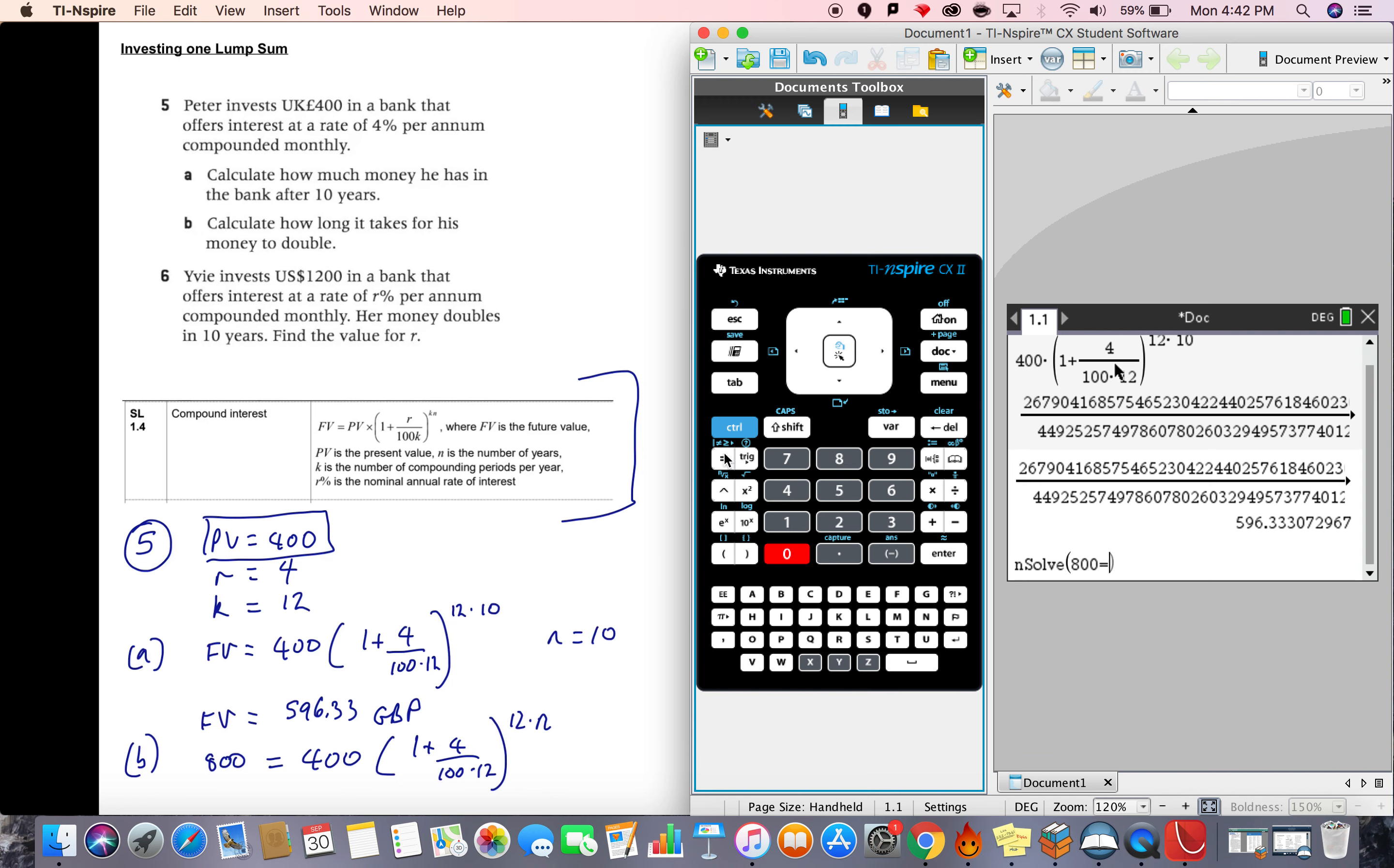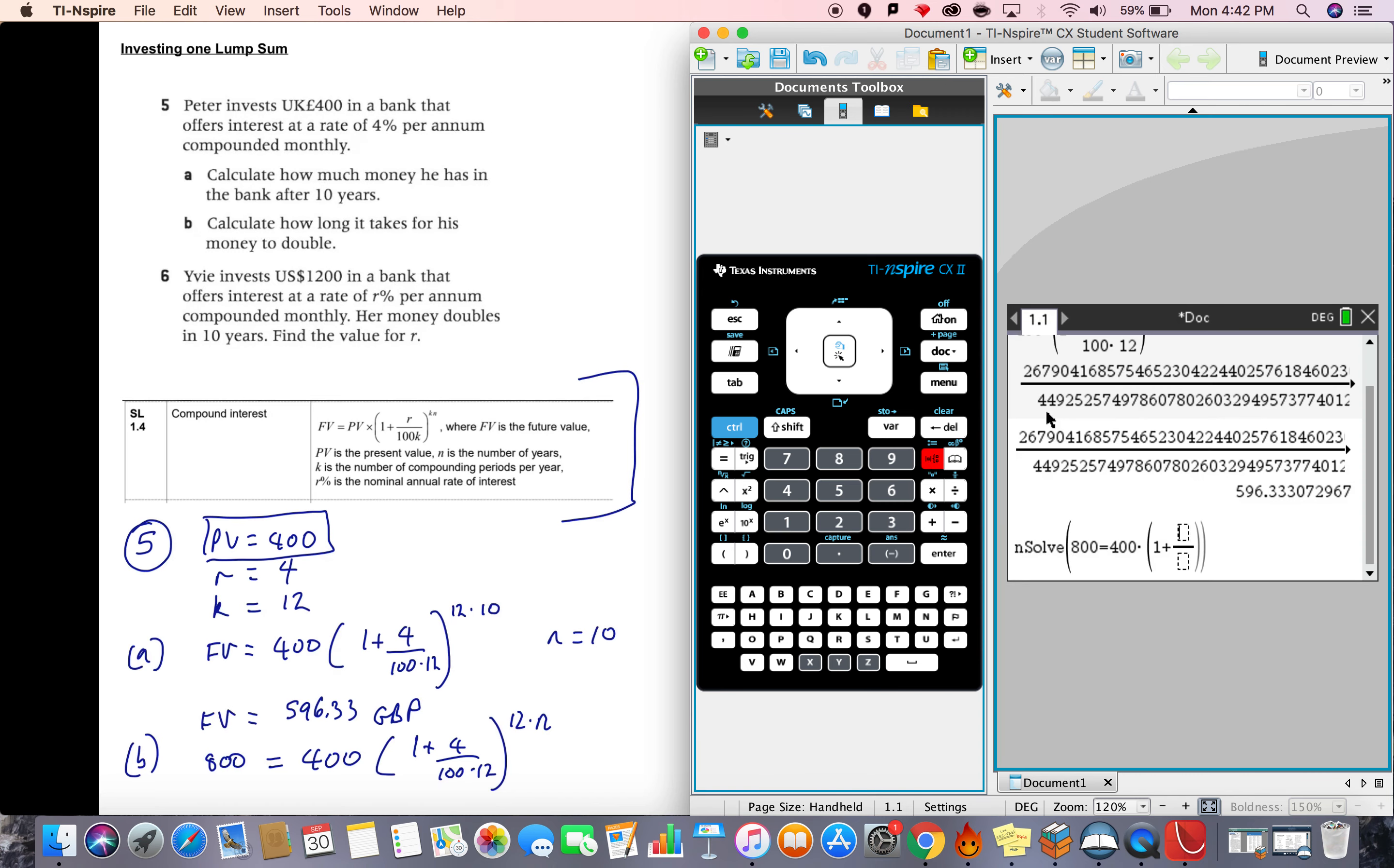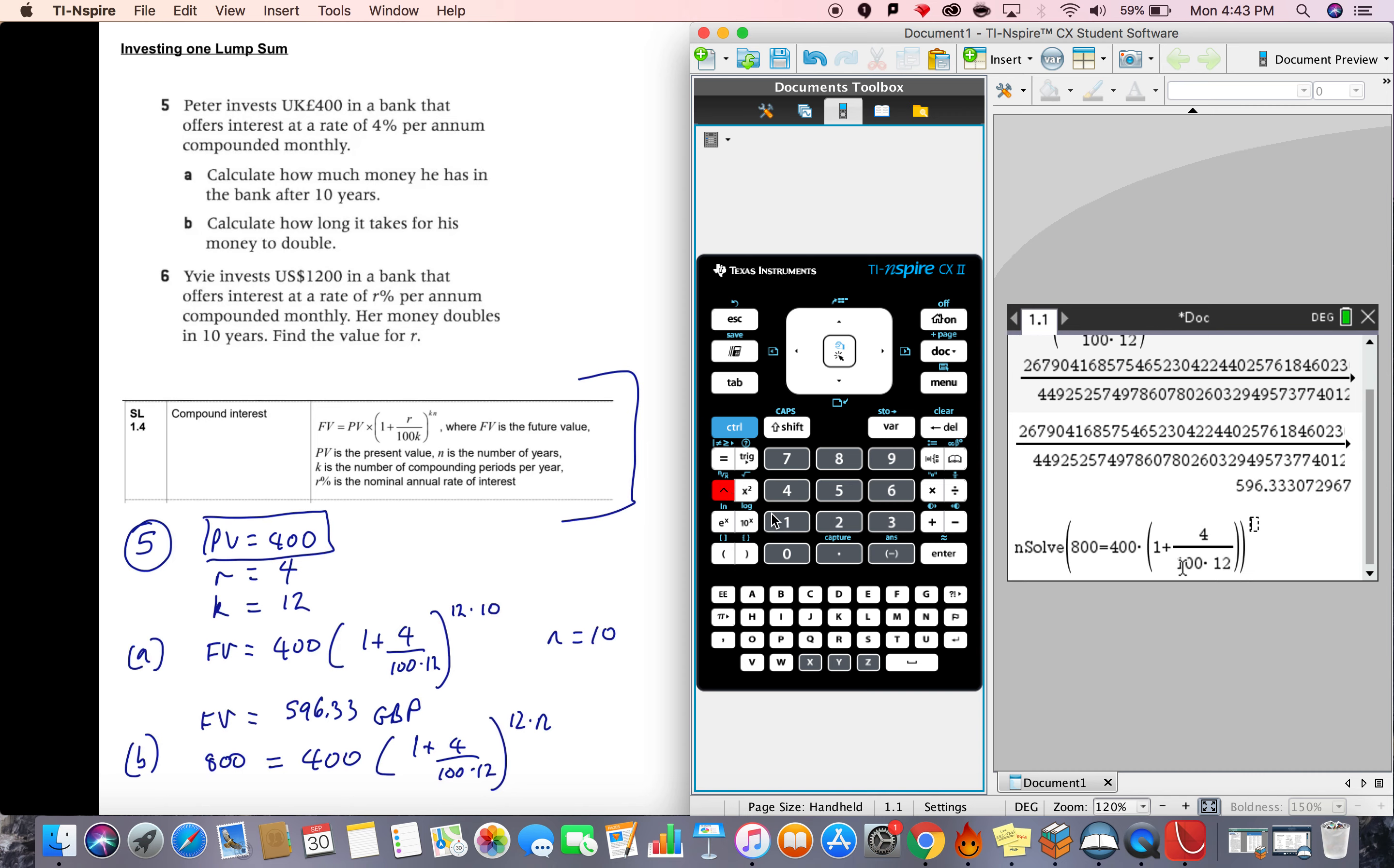So we type in the exact equation: 800 equals 400 times by open bracket, 1 plus fraction, 4 over 100 times 12, all powered up to 12 times n. We want to solve that equation with respect to variable n, close the bracket.